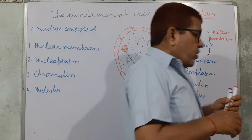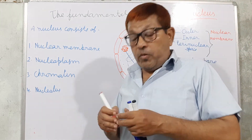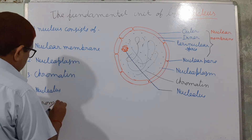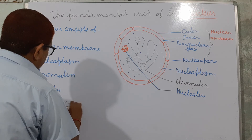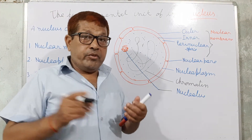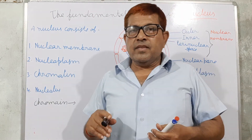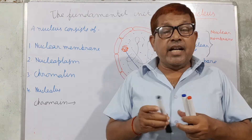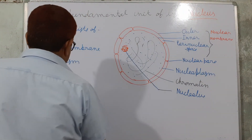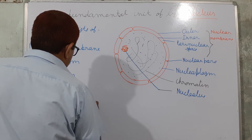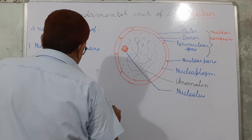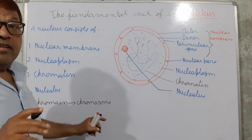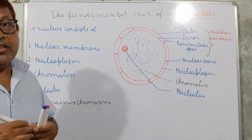You see here one chromatin — this is a very important part of the cell. This chromatin, during cell division, becomes condensed and thick, and now it is called the chromosome. So the chromatin is a thread-like structure, and during cell division this chromatin becomes condensed and is now called the chromosome.